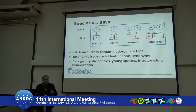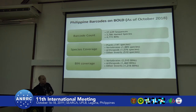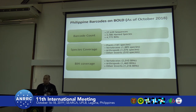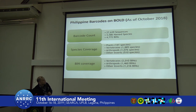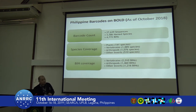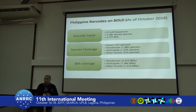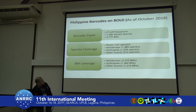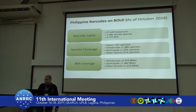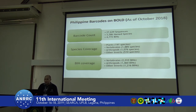To give some idea of how much data we have for the Philippines: for the barcode count, we have 27,639 sequences — very small considering that the Philippines has very high biodiversity and is in fact a biodiversity hotspot. These are linked to 3,586 species but with 4,772 BINs, meaning we actually have more BINs than actual species, which has taxonomic implications. In terms of species coverage, the majority of the data come from vertebrates, while invertebrates comprise nearly 97% of the animal kingdom, so there is clearly a strong bias towards vertebrates.